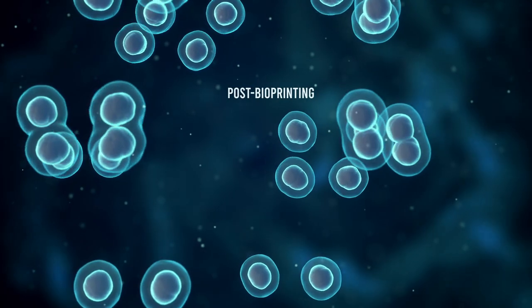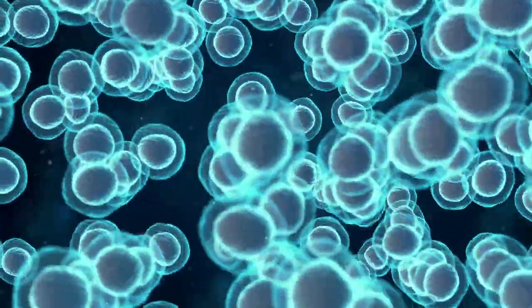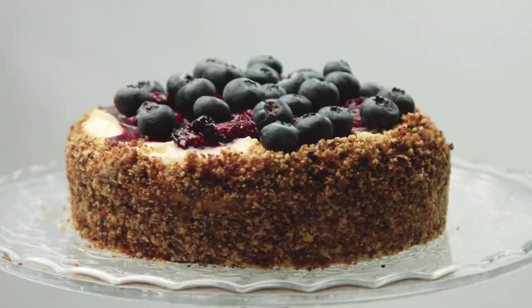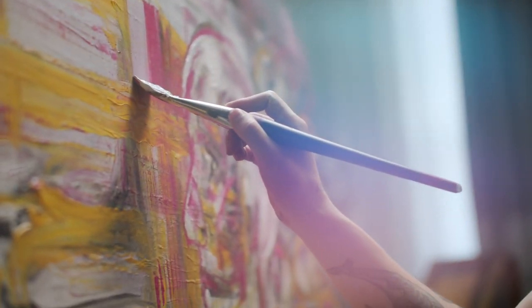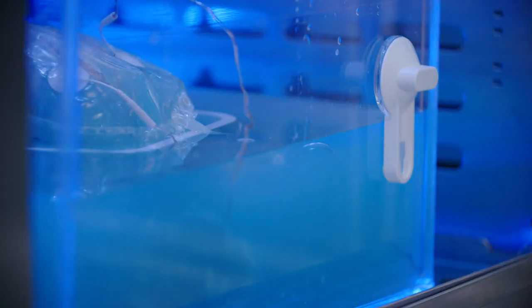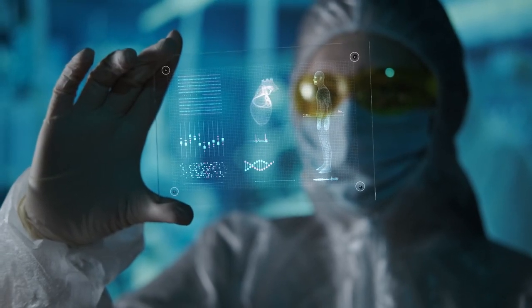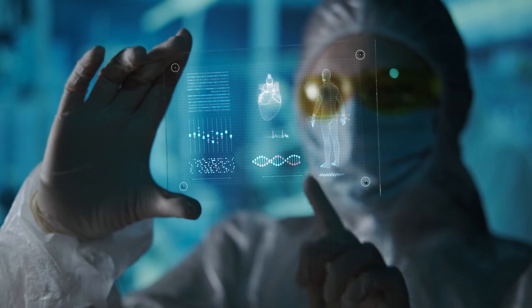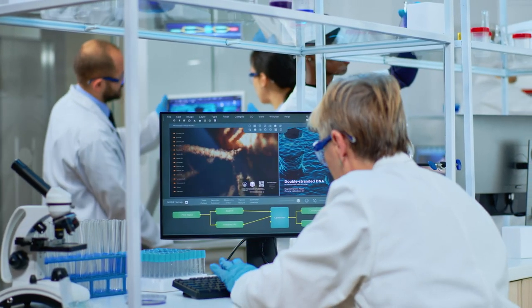Lastly, we have post-bioprinting. This is when the printed structures get their finishing touches. Just like letting a cake cool or a painting dry, the structures need to become stable. This is done by either soaking them in a special solution or zapping them with UV light. The scientists decide which method to use based on what the structures are made of. Then the structures get cozy in an incubator to grow and develop. It's like giving them a warm and cozy place to hang out while they become real tissues.